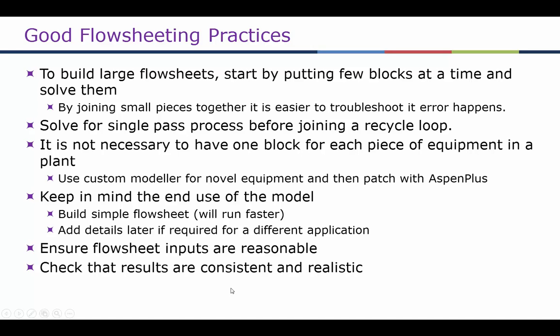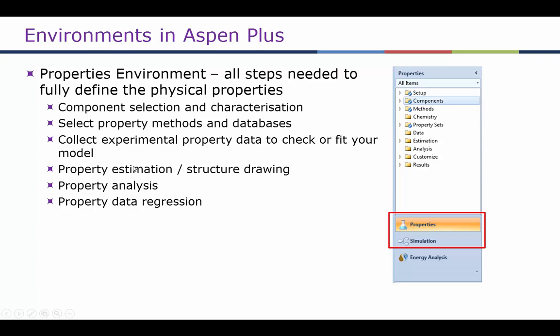To begin any simulation in Aspen Plus, we need to first go to the properties environment, where all the steps needed to fulfill the physical properties must be entered. On the right-hand side you can see a screenshot of the properties method. The first step is normally to enter all the components and then select the property method.